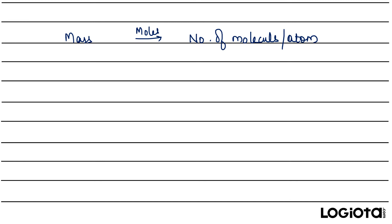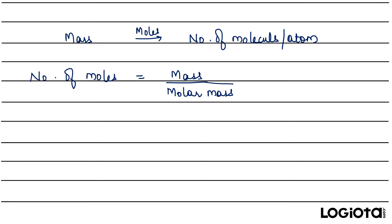Now, to find the number of moles if the mass is given, that is equal to mass divided by molar mass of that molecule. The mass has units of grams and the molar mass has units of grams per mole. So after cancelling the units, you get the final answer in terms of moles.